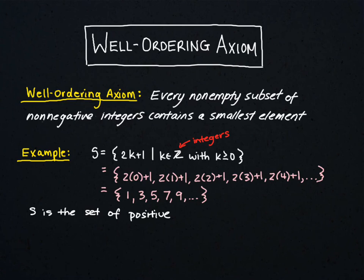So I'll finish writing this out in words. Set S is the set of positive odd numbers. And it has a least element, which is guaranteed to us by the well-ordering axiom. And we can see that indeed here, that smallest element is going to be 1.